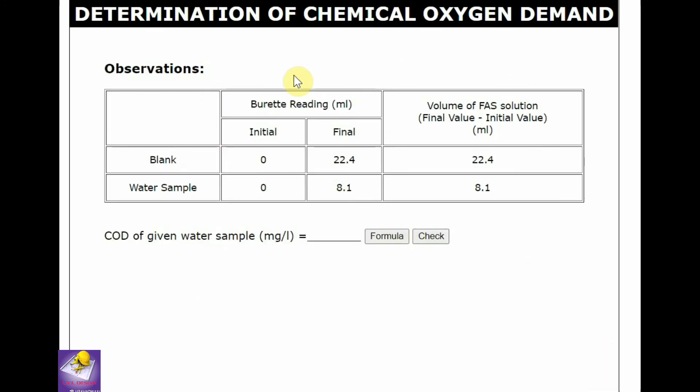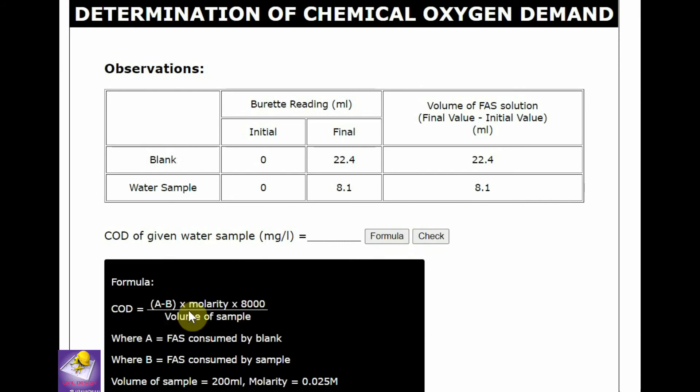So that is the final observation table: the blank titration and the water sample test. 22.4 the final amount, 22.4, and the water point 8.1, that is 8.1 ml. Then the COD of given water in mg per liter, the formula should be: (A minus B) multiply molarity multiply 8000 divided by volume of sample. A is the blank solution volume and B is the sample. This is A and this is B.